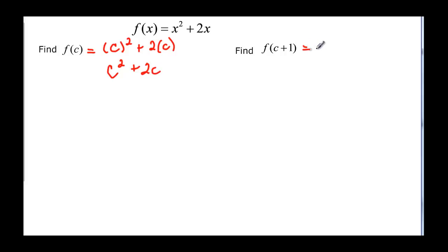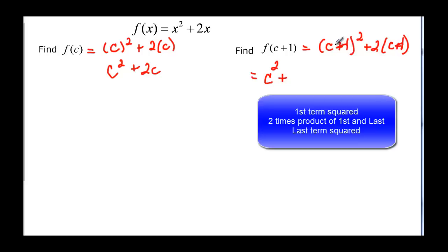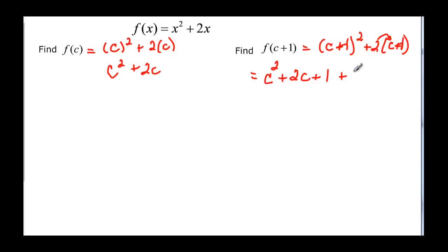One more. So now we have the quantity (c plus one) squared, plus two times (c plus one). For (c plus one) squared, remember the shortcut: it's the first term squared, plus twice the product — c times one is c, times two is two c — and then square the last, so one squared is one. Then distributing the two times (c plus one) gives two c plus two. Simplifying: c squared, two c plus two c is four c, and one plus two is three, giving c squared plus four c plus three.